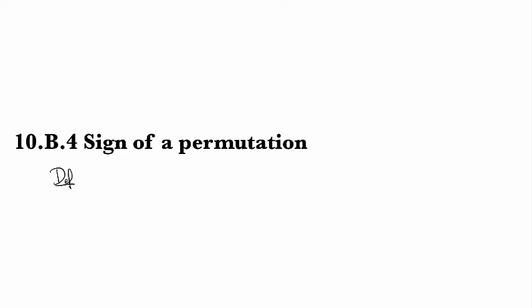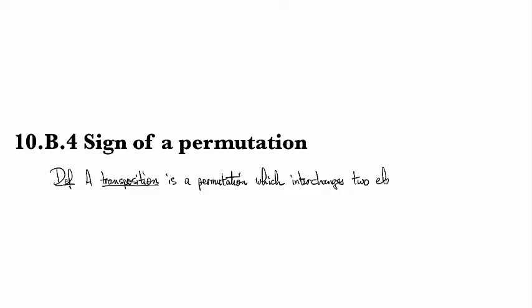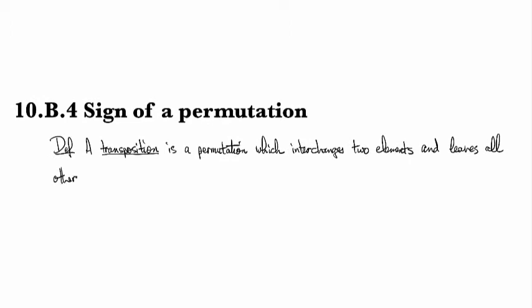It turns out that each permutation has associated to it a well-defined notion of sign, positive or negative. For this we need the idea of a transposition. A transposition is a simple type of permutation that just interchanges two elements and leaves everything else fixed.